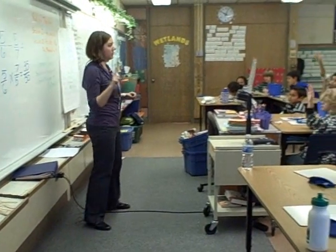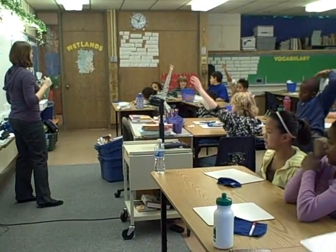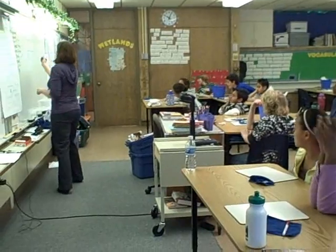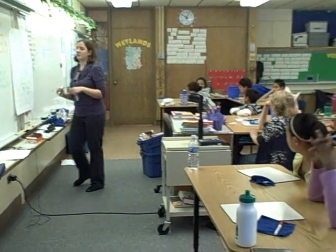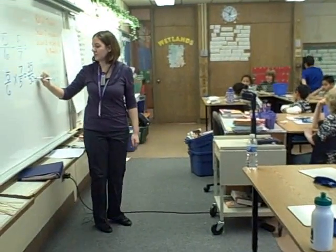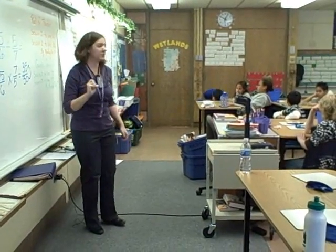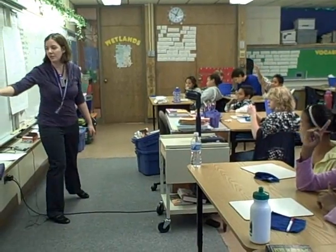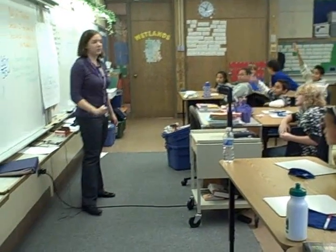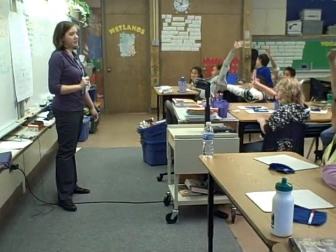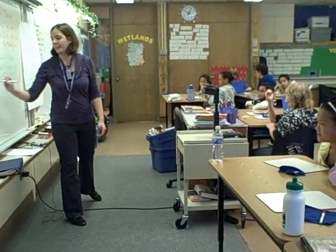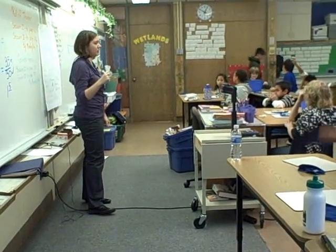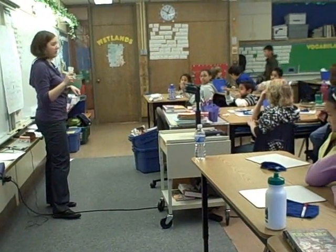How would we reduce thirty-five over thirty? What's the question we would ask ourselves? Taylor: how many times can thirty go into thirty-five? Nice job, Taylor! How many times does thirty fit into thirty-five? Danielle? One. One time — how many are left over? Five. And what size are those pieces, out of how many makes a whole? Thirty.